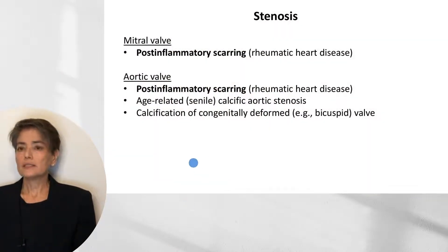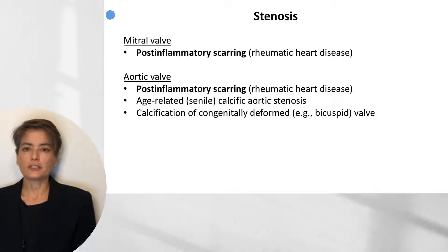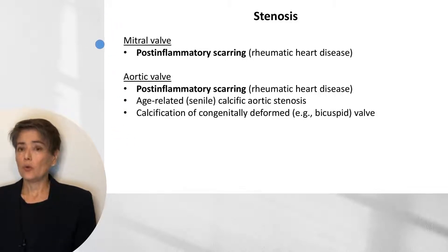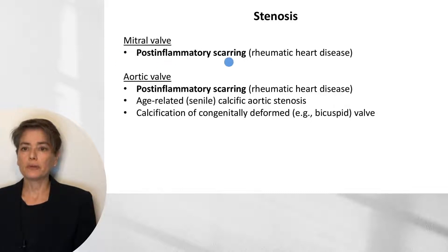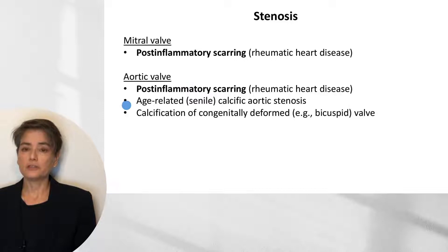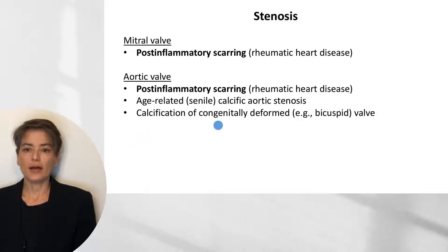Now let's look at the causes of stenosis and insufficiency in the aortic and mitral valves, drawn from a table in Robbins. The only acquired cause of mitral valve stenosis is post-inflammatory scarring secondary to rheumatic heart disease. That is also a cause for aortic valve stenosis, but more commonly aortic stenosis will be age-related calcific aortic stenosis or calcification of a congenitally deformed valve—for example, a bicuspid valve.